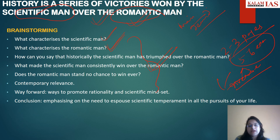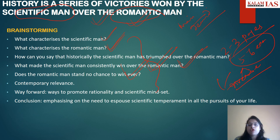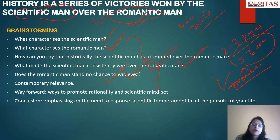Then you come to the reasons what made the scientific man consistently win over the romantic man. After that, you come to the counter argument part — does the romantic man stand no chance to win? You counter the main statement by showing that it is not always the case, and there are situations where the romantic man has also won. Then you come to the contemporary relevance of this quotation — a very, very important aspect of the essay.